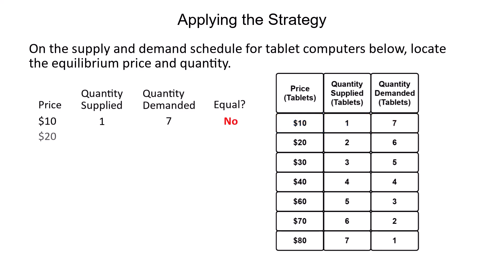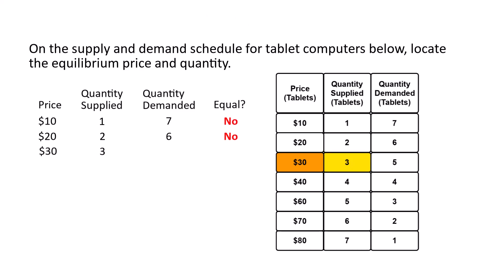Let's move down to the next price of $20 per tablet. At the price of $20 per tablet, the quantity supplied is 2 tablets and the quantity demanded is 6 tablets. So the quantity supplied and the quantity demanded are not equal because the quantity supplied of 2 tablets is less than the quantity demanded of 6 tablets. Let's move down a row to the price of $30 per tablet. At a price of $30 per tablet, the quantity supplied is three tablets and the quantity demanded is five tablets, so they are not equal.